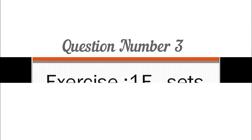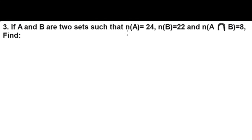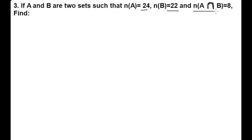Question number 3: If A and B are two sets such that the number of elements in set A is equal to 24, the number of elements in set B is equal to 22, and the number of elements in A intersection B is equal to 8.